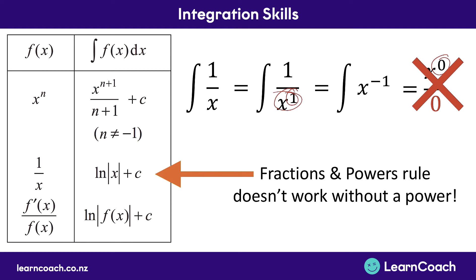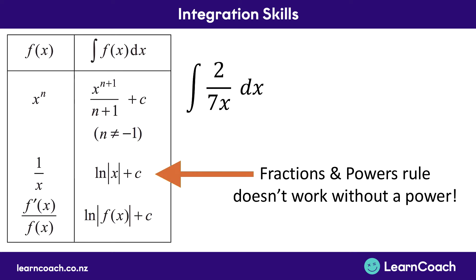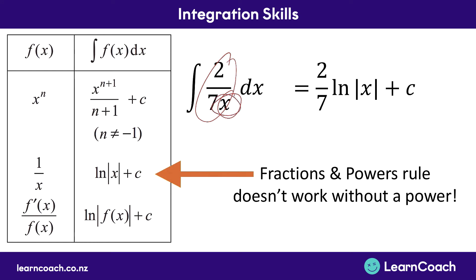The second rule says: if you don't have a power on the bottom of a fraction, you add log in front of that term. So 1 over x integrates through to log of x plus c. You'll notice the straight lines (absolute value bars) on either side of x — that just means if whatever's inside is negative, it turns it positive. It's not common to worry about in exams; just treat them like brackets. For example, if we have 7 over 2x, there's no power on the x, so we keep our constants the same and multiply the x term by log. That becomes 7 over 2 times log x, plus c.